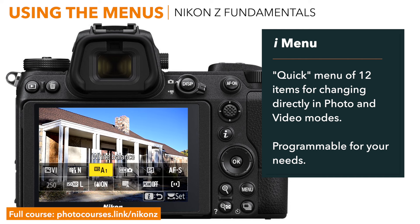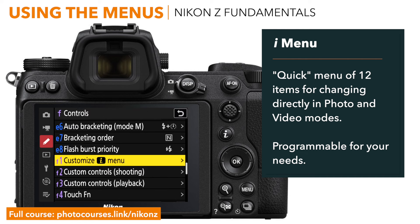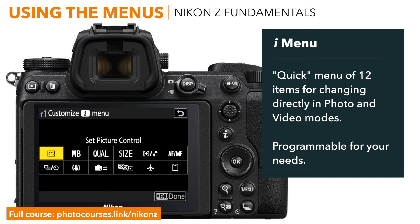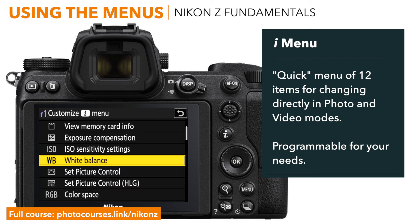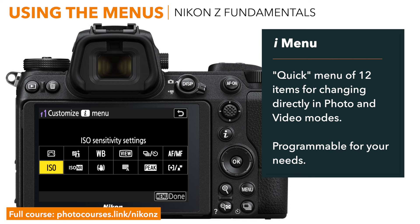Now that i menu is great if those default 12 settings are the 12 settings that you want to use. But what if they're not? You can customize this i menu. You can get rid of items that you never use and replace those with items that aren't in the i menu but that you use quite a bit. To customize or rearrange your i menu and put different options in there, go to the custom settings menu F1 for shooting mode and G1 to customize the movie mode i menu. When you're in here, all you need to do is highlight the item that you want to change and press OK. Select from that list the item that you want to put in there, press OK again to save it, repeat that process and just press menu when you're done. Use the camera for a while and note which settings you'd like to have in your i menu and how you want to arrange it.